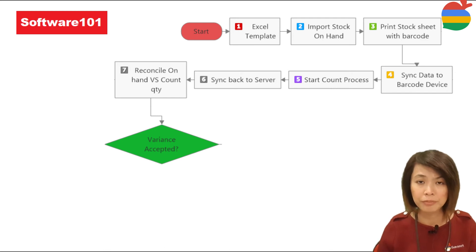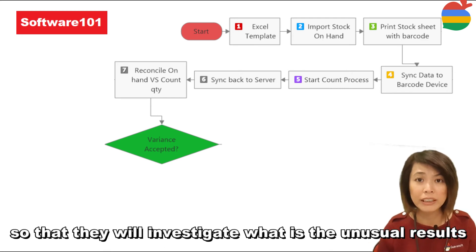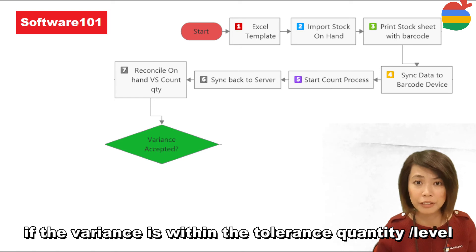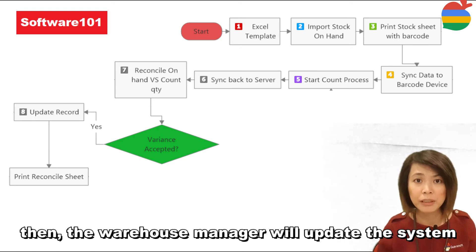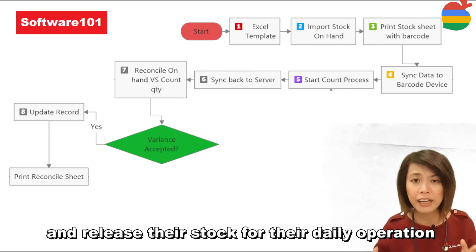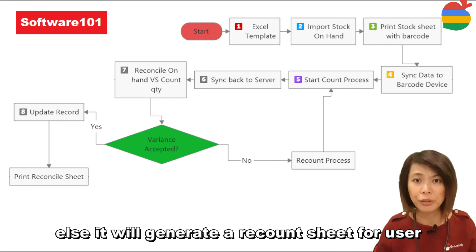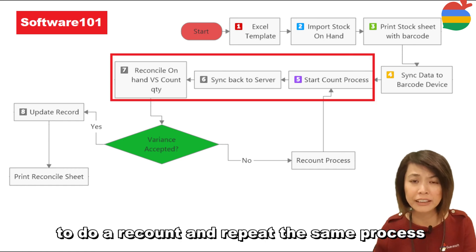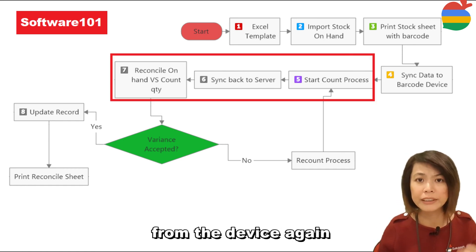The warehouse manager will verify that all tags were returned, then reconcile the on-hand quantity versus the count quantity to investigate any unusual results. If the variance is within the tolerance level, the warehouse manager will update the system and release stock for daily operations. Otherwise, a recount sheet will be generated for the user to perform a recount, repeating the same process from the device again.